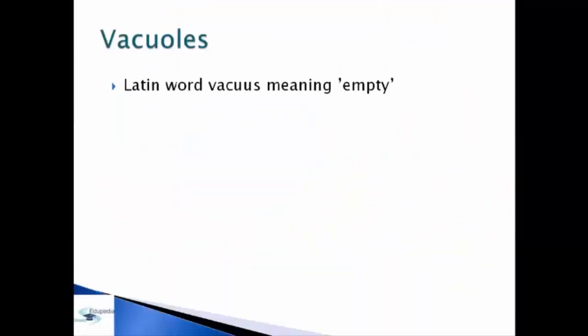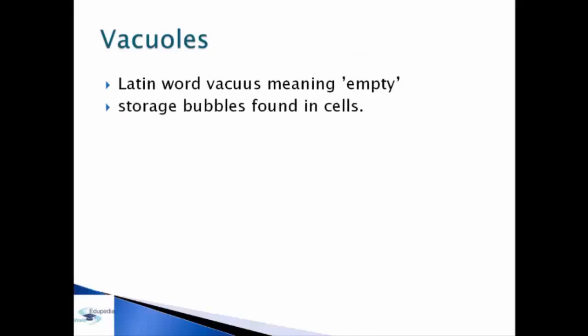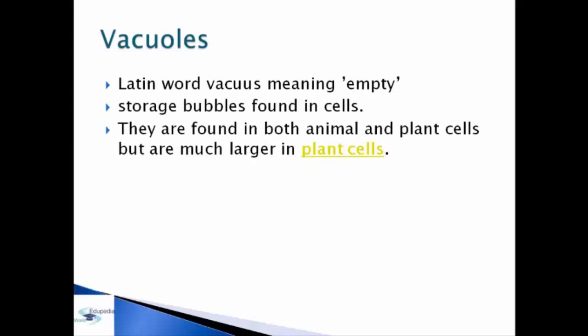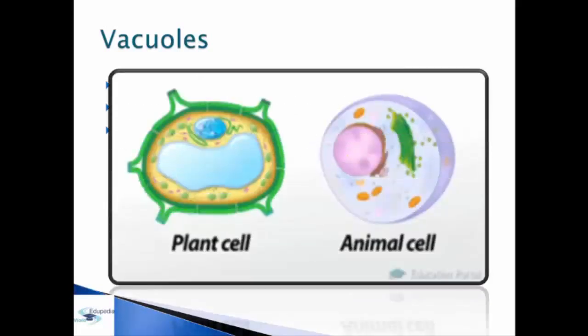Vacuole is from the word 'vacuos' meaning empty. Vacuole is a storage bubble found in cells, and they can commonly be found both in animal and plant cells. But in plant cells they are much bigger than in animal cells. As you can see in the picture, this is the vacuole of the plant cell, and this is the vacuole of the animal cell.